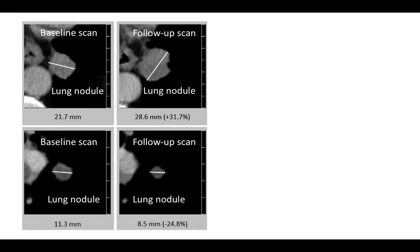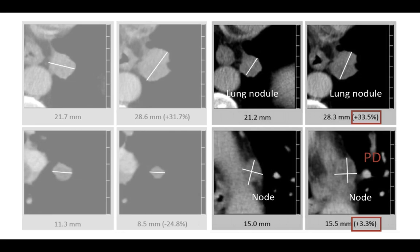Why did this happen? Here is an illustrative case: the first radiologist interpreted the baseline scan using two lung nodules as target lesions. On the follow-up scan, one nodule increased in size and the other decreased, so the overall response was stable disease. The second radiologist selected one lung nodule and a lymph node as target lesions; on the response scan the node was stable but the lung nodule increased — overall this was progression. Clearly, the selection of the target lesion was important in categorizing the response.